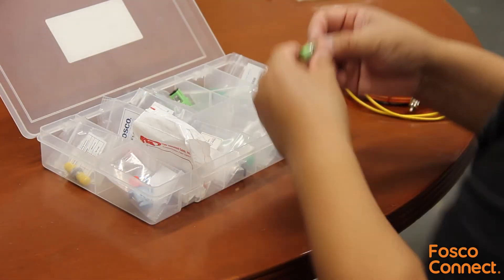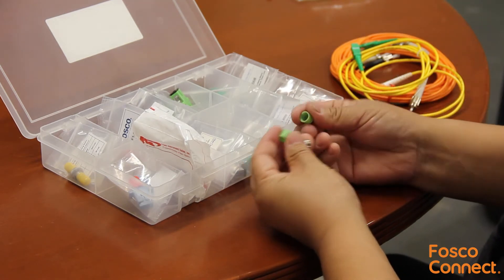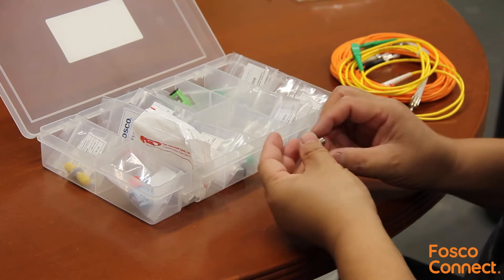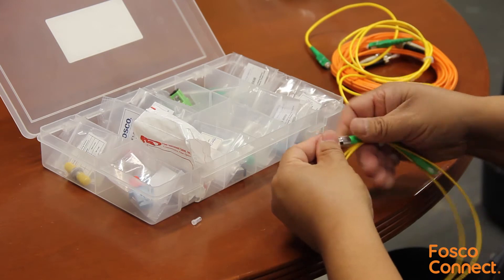The next one is a FC-APC to FC-APC adapter. The green color dust cap means that it is designed for APC 8 degree angle polished FC connector. This is how it's used.